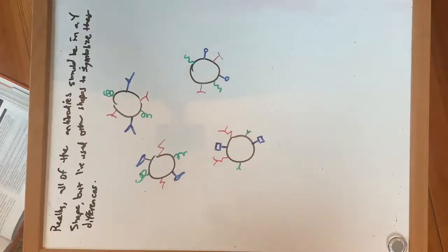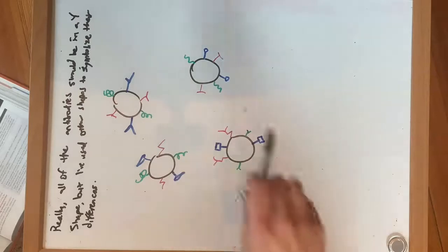The antibodies really should all have that Y-like structure, but it was really difficult to draw that small. So the different shapes just symbolize different variations on that normal antibody shape.